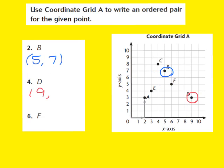My next step is to see where D is located on the y-axis. Starting from the origin, 0, 0, I move up 1, 2, 3. I stop at 3 because point D is located at 3 on the y-axis. So I write down 3 as my y-coordinate. I now know that point D is located at 9, 3 — and that is my ordered pair for point D.